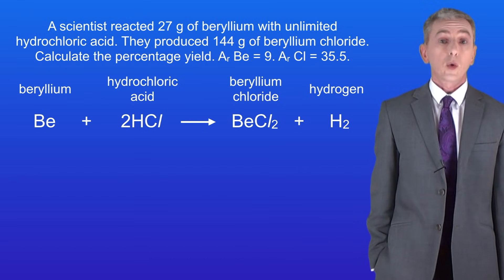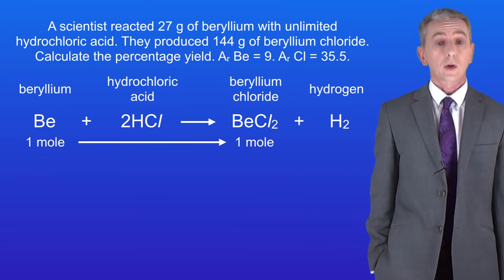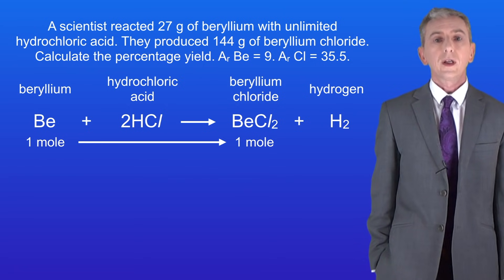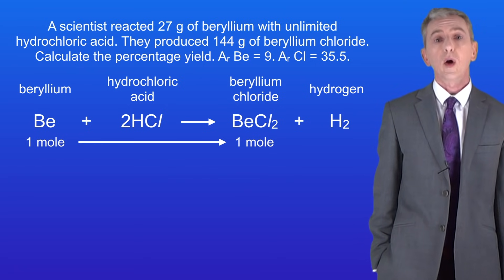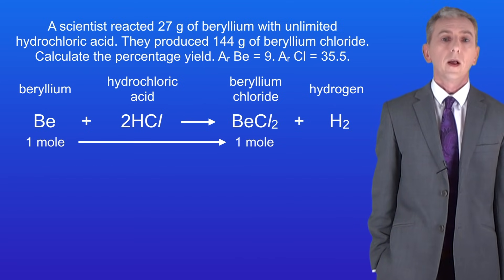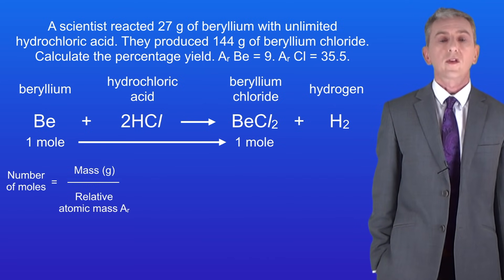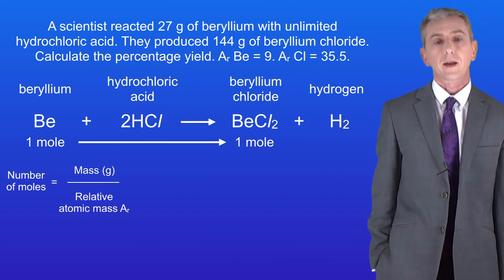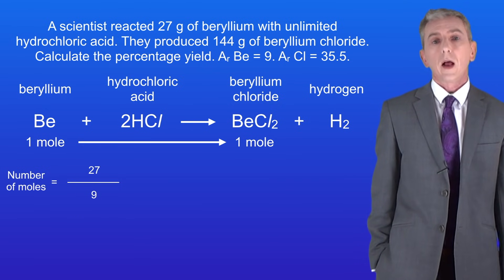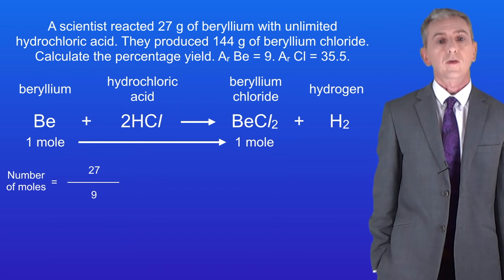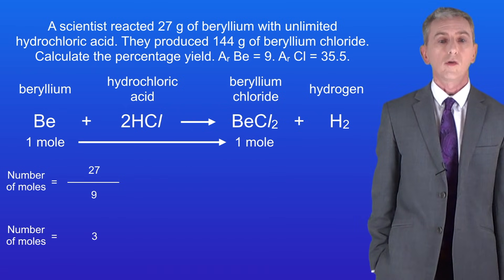Looking at the equation we can see that one mole of beryllium could produce one mole of beryllium chloride. We need to start by calculating the number of moles of beryllium that we're starting with. The number of moles is the mass divided by the relative atomic mass. We're reacting 27 grams of beryllium and the relative atomic mass of beryllium is 9, so that means we've got three moles of beryllium.